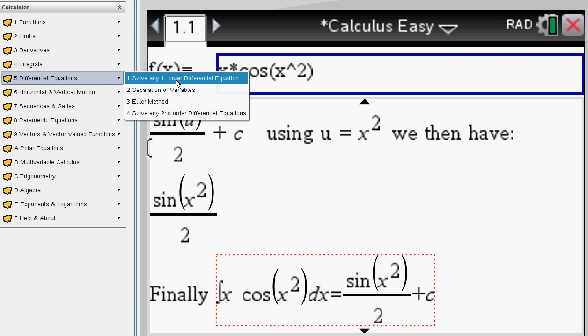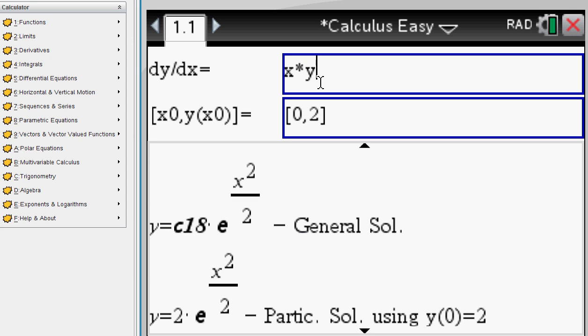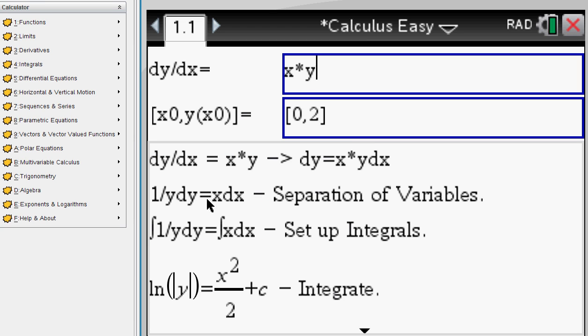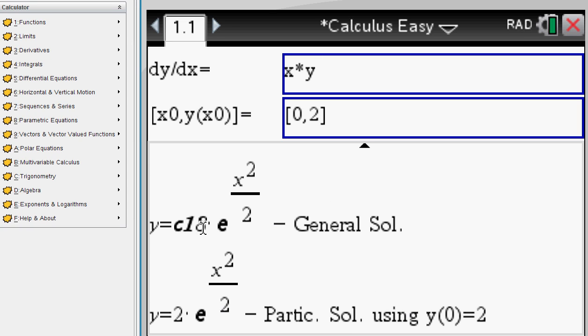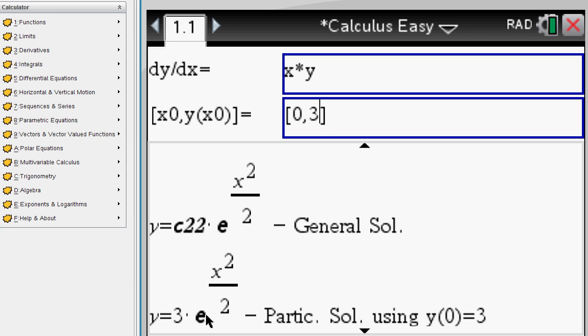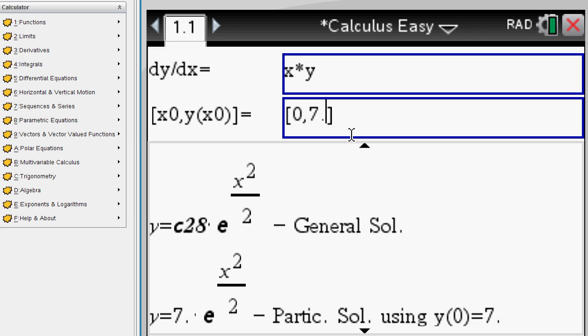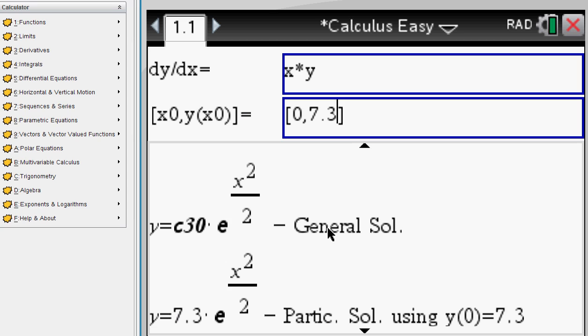Differential equations. Solve any differential equation. Euler method. Second order differential equation even. Let's look at separation of variables. Well, you gotta have a separable differential equation like this one. Scroll up. See the steps. Separation of variables happening. Integral setup. Integration taking place. You get your general solution. And down here are your initial values. You change them. You change your particular solution immediately. How good is that? And as I said, if you enter decimals, you get decimal answers.